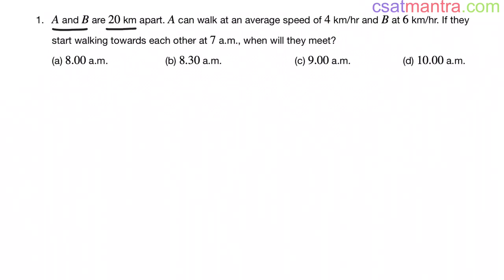A and B are 20 kilometers apart. A can walk at an average speed of 4 kilometers per hour, B at 6 kilometers per hour. If they start walking towards each other at 7 a.m., when will they meet?